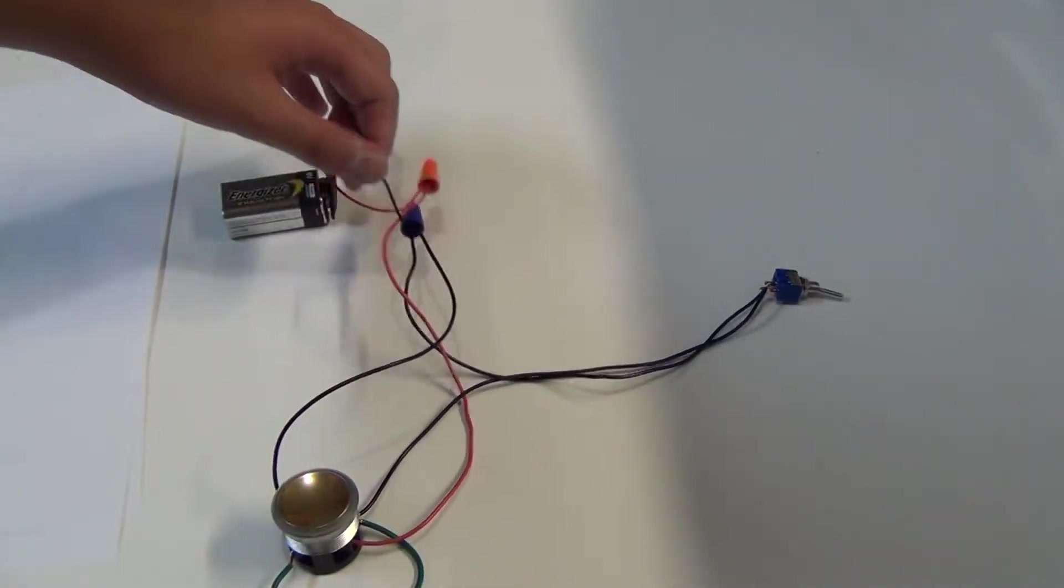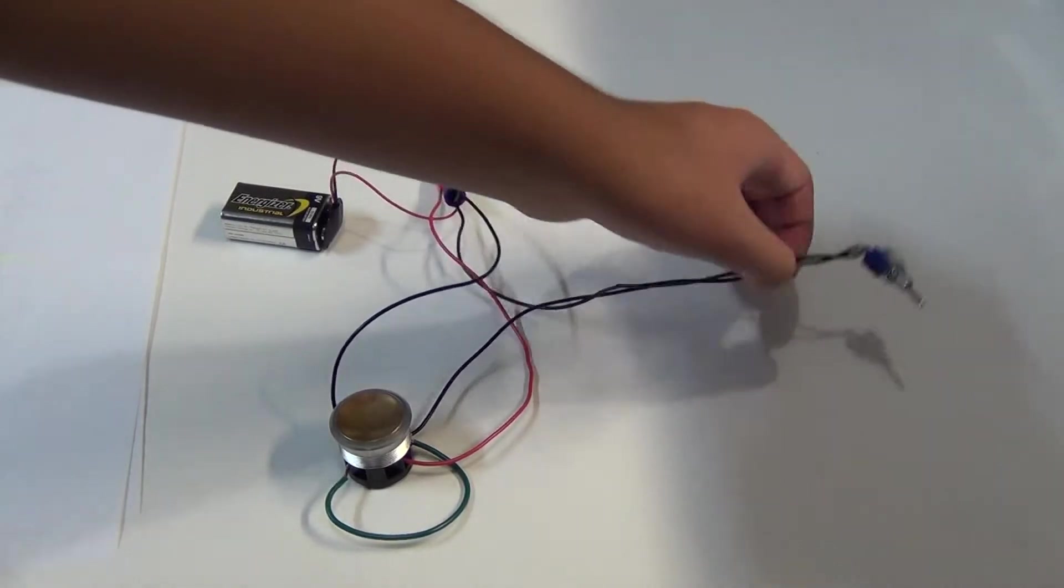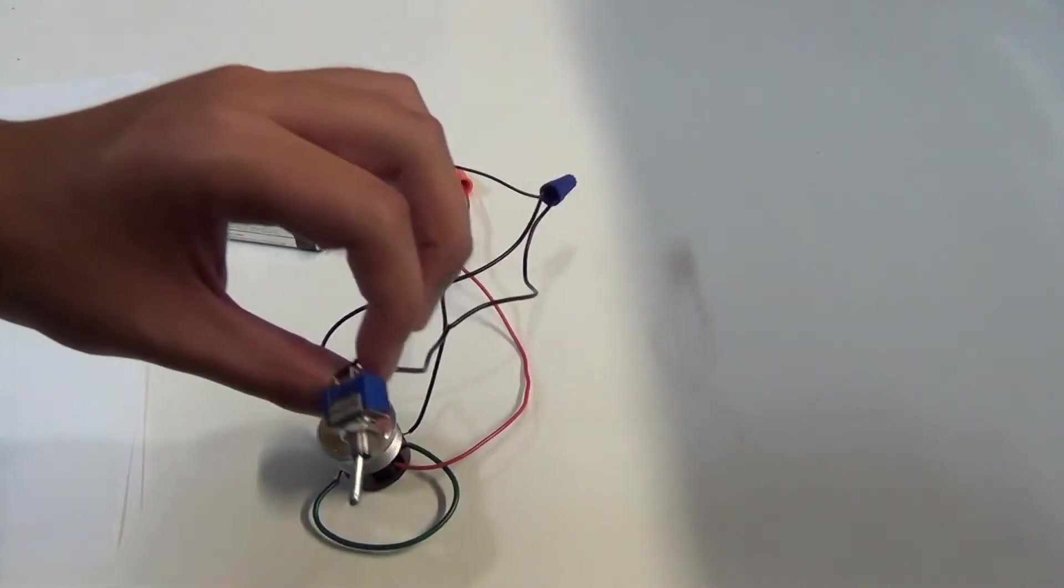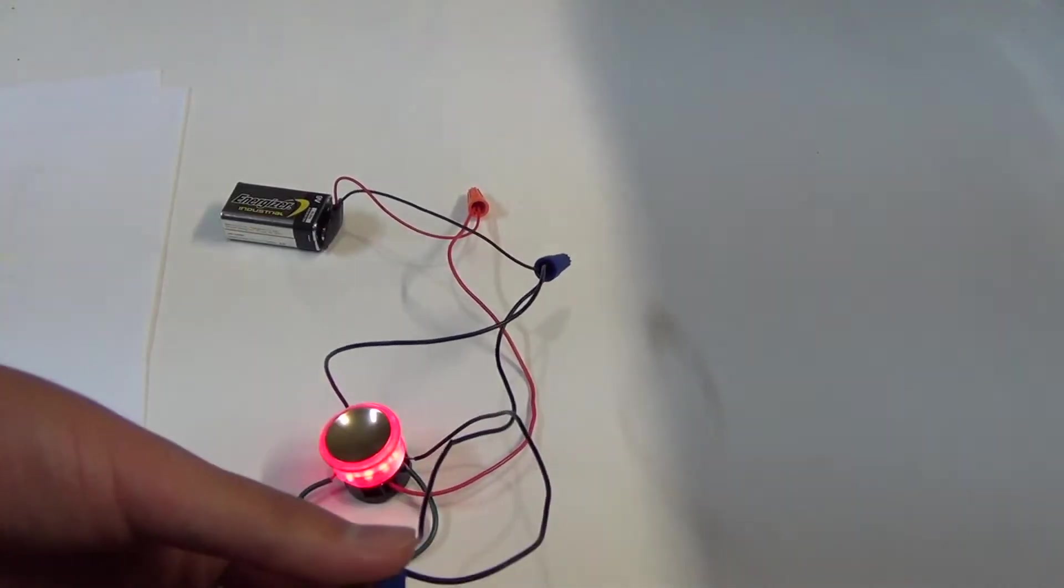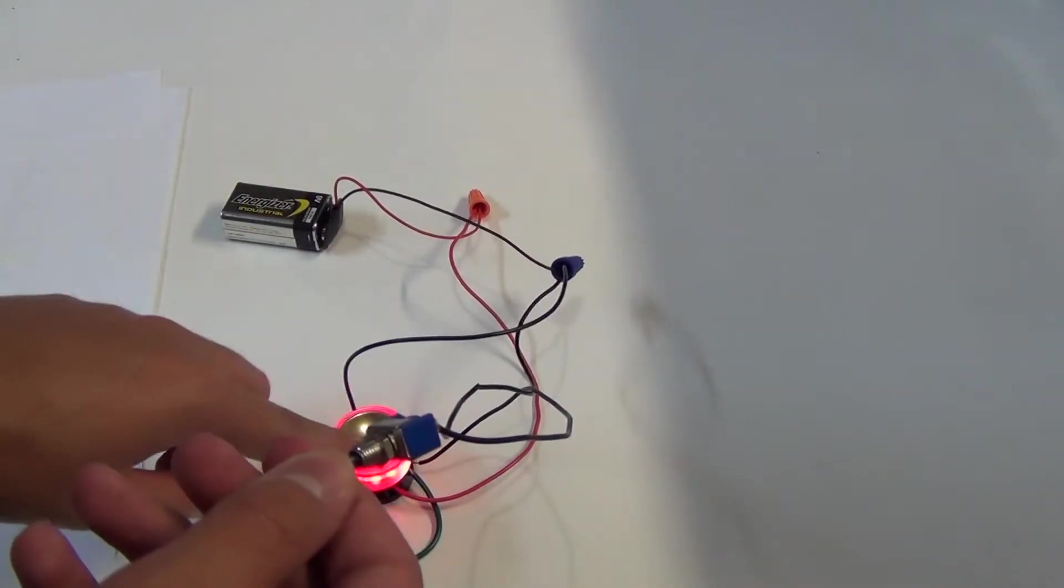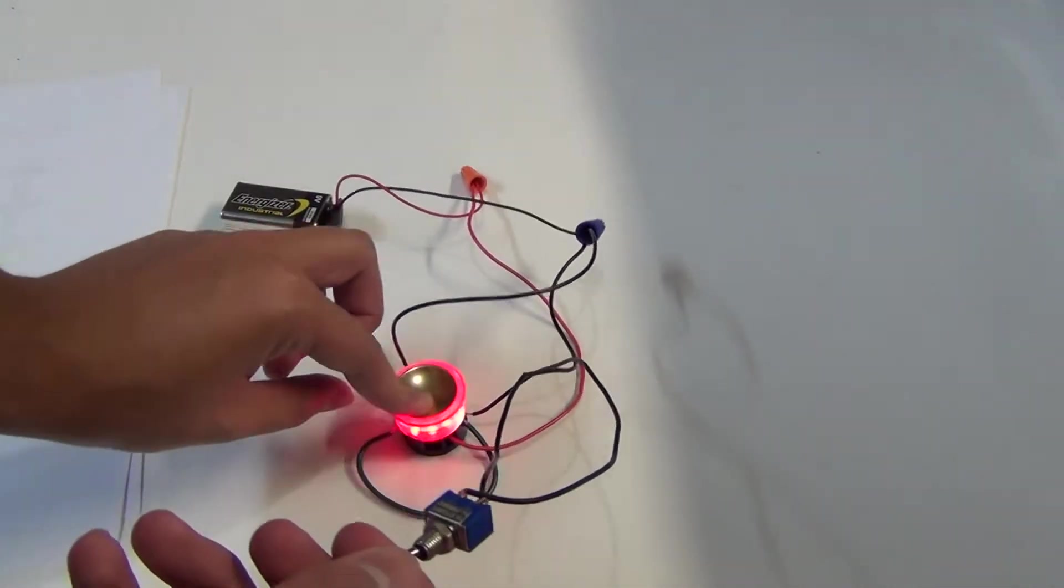You're going to want to take the negative wire, and in this case we installed a toggle switch, which is able to toggle the button on all the time, or only on when you push it, which is very good.